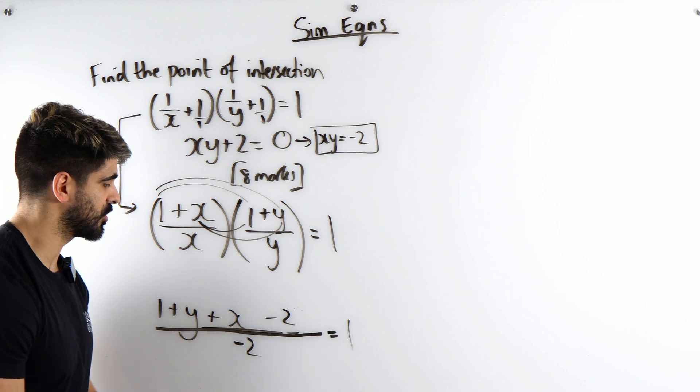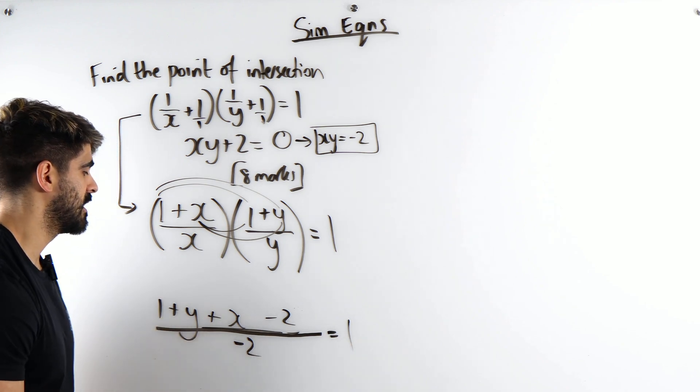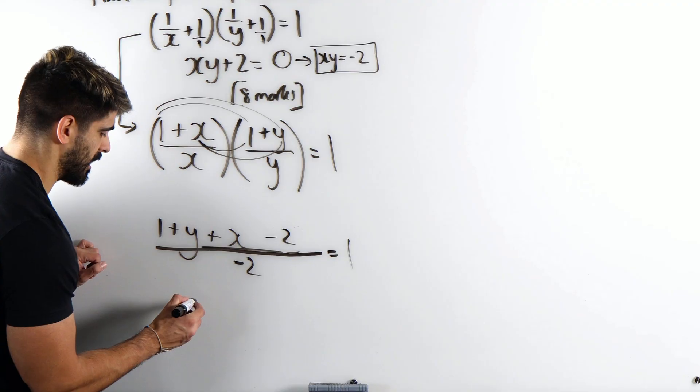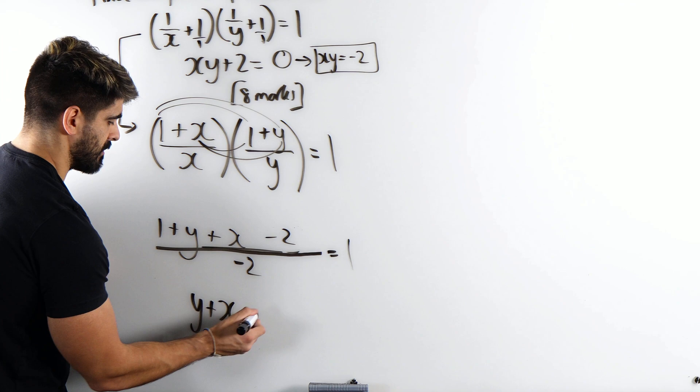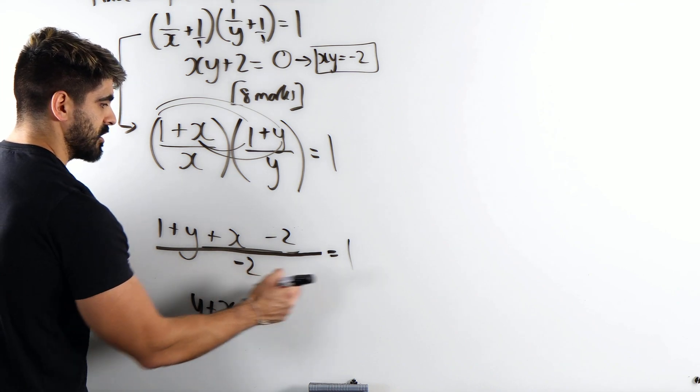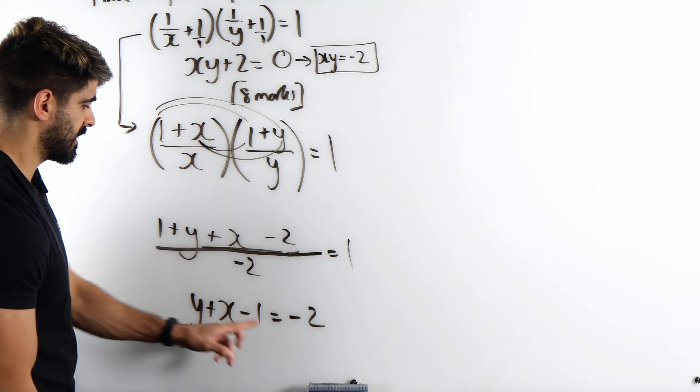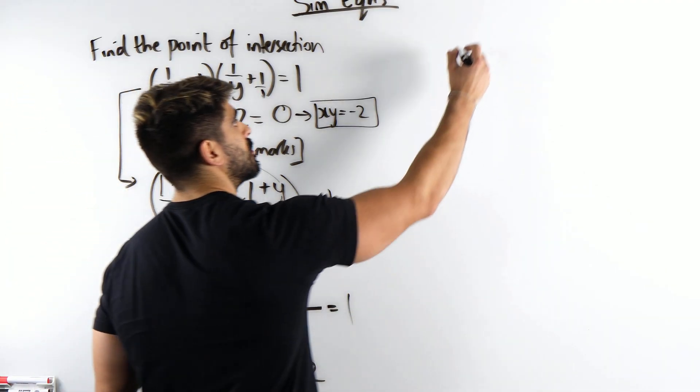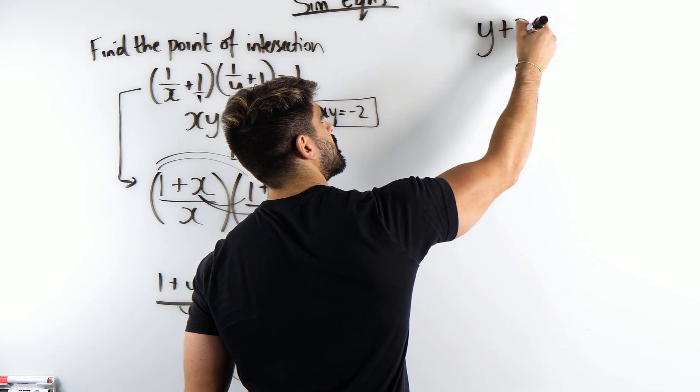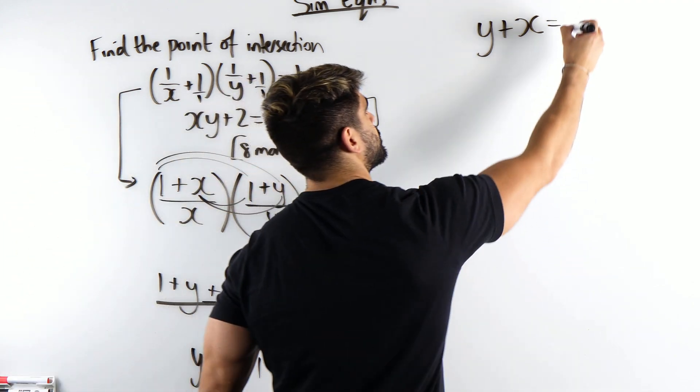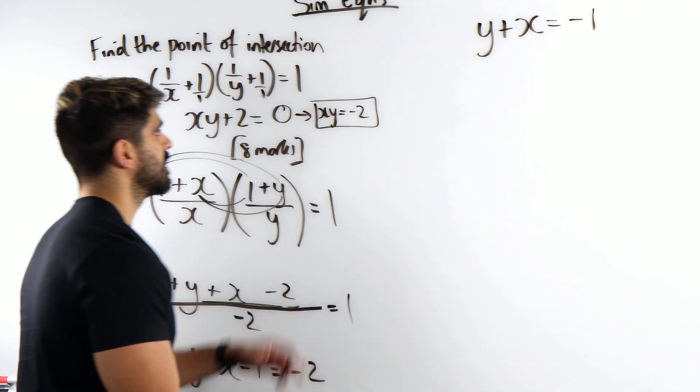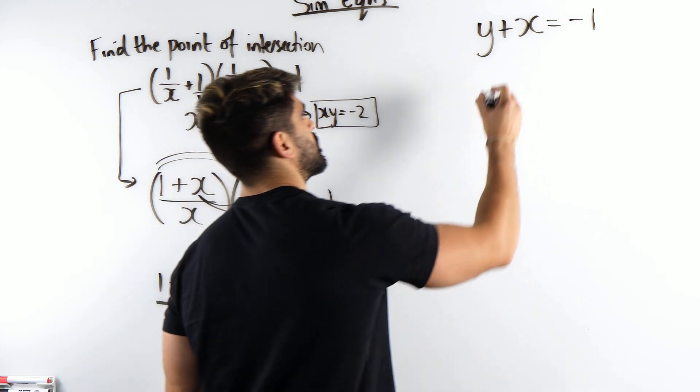So times by minus 2, that is going to be minus 2. We have y plus x, 1 minus 2 is minus 1, is minus 2 times 1 is minus 2. So we're going to add the 1. We're going to get y plus x is, when we add the 1, we get minus 1. And we have xy is minus 2.